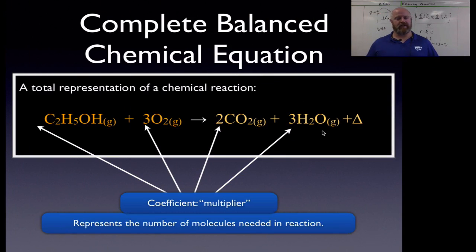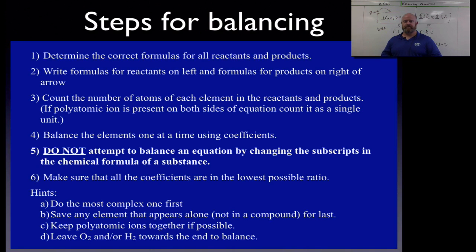Now, there are, of course, rules to the game. If we take a look at these rules, here's your step-by-step process. So step number one, determine the correct formulas for all reactants and products. So we already had the formulas in this example given to us. In some cases, you may have a word equation where we actually just write it out in sentence form. So you'll have to first write the formulas and then balance the equation. So good thing we learned how to write formulas in our last unit. So we can do that. Make sure you put the formulas for the reactants on the left, formulas for products on the right. Then go ahead and count the number of atoms of each element in the reactants and products, which we did.